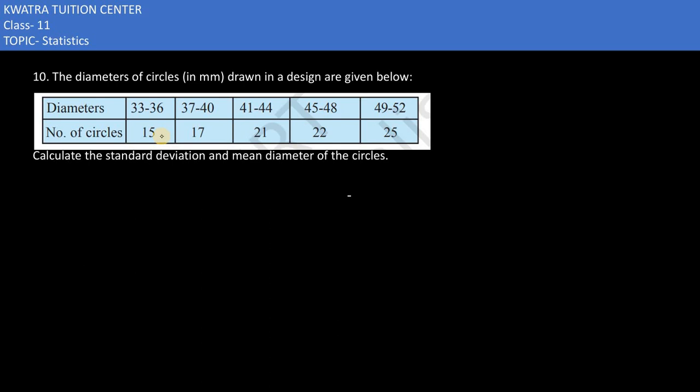In the tenth part, it says: the diameter of circles drawn in a design are given below. Diameters are the number of circles. They are asking us to calculate the standard deviation and the mean diameter.